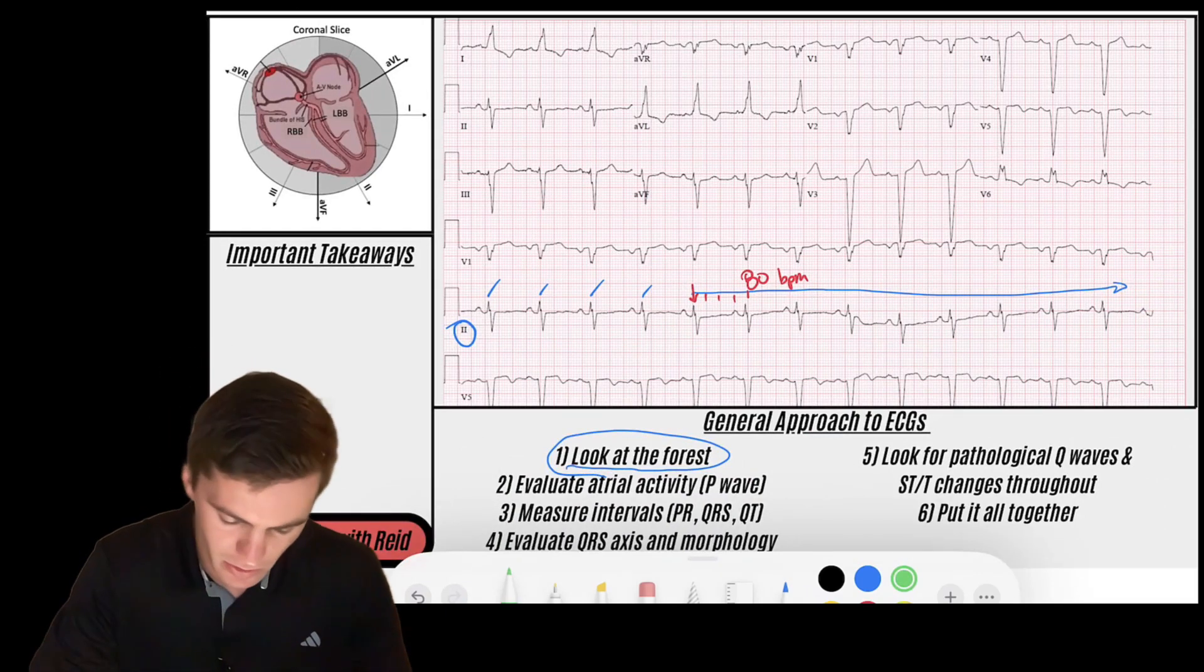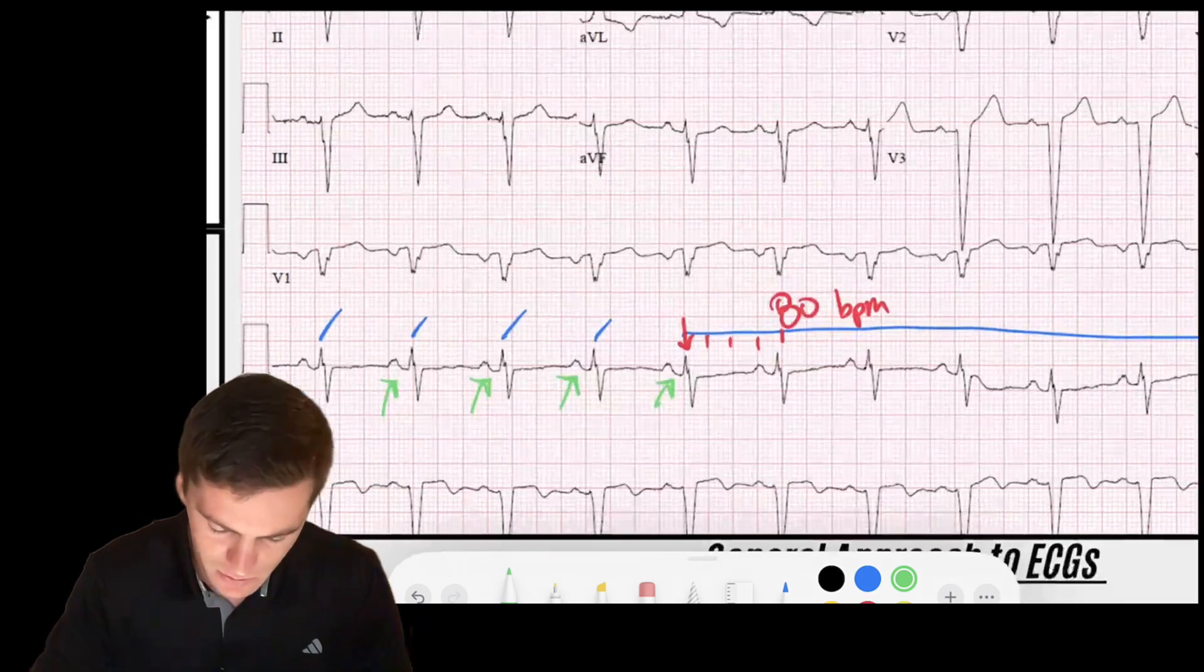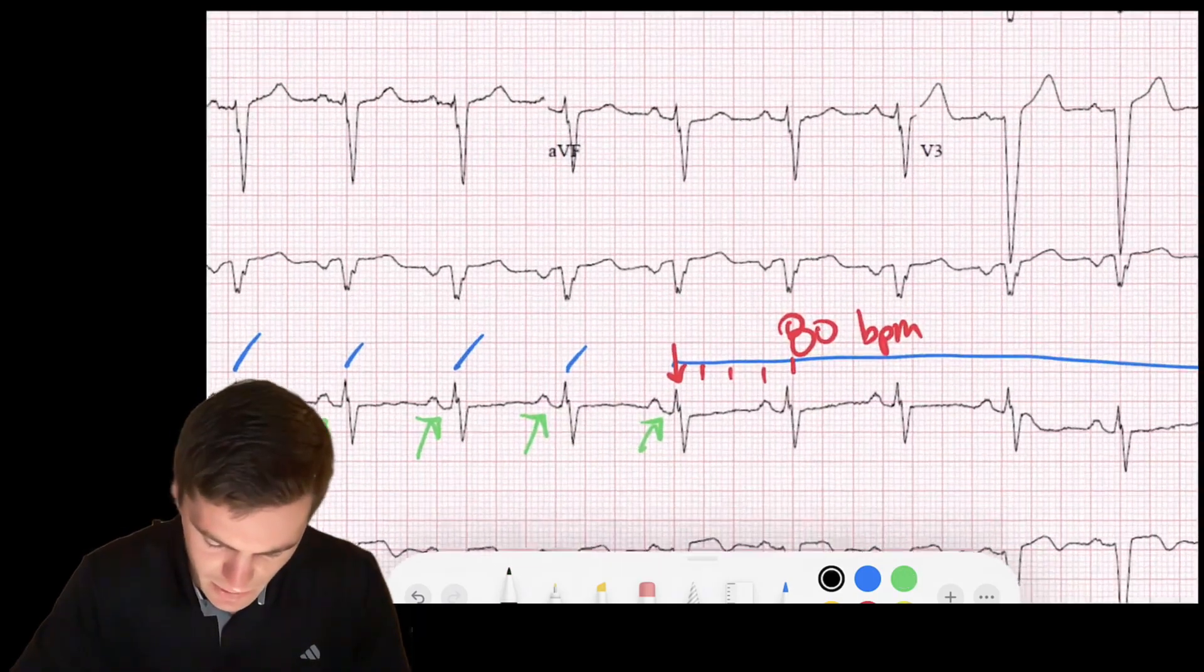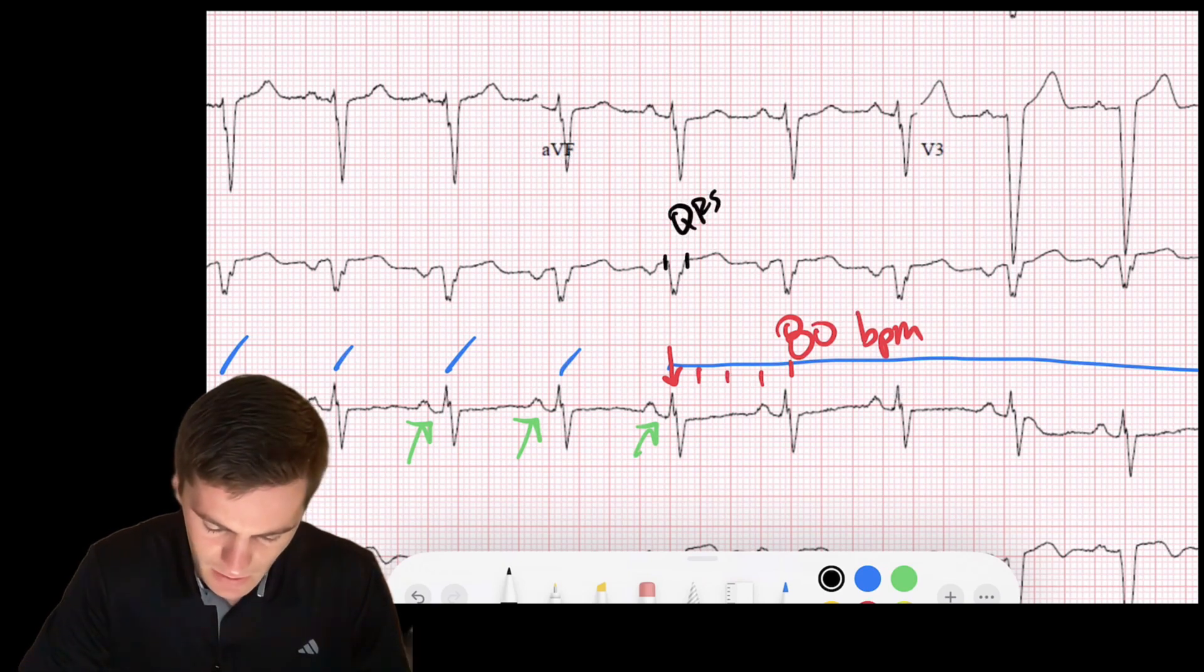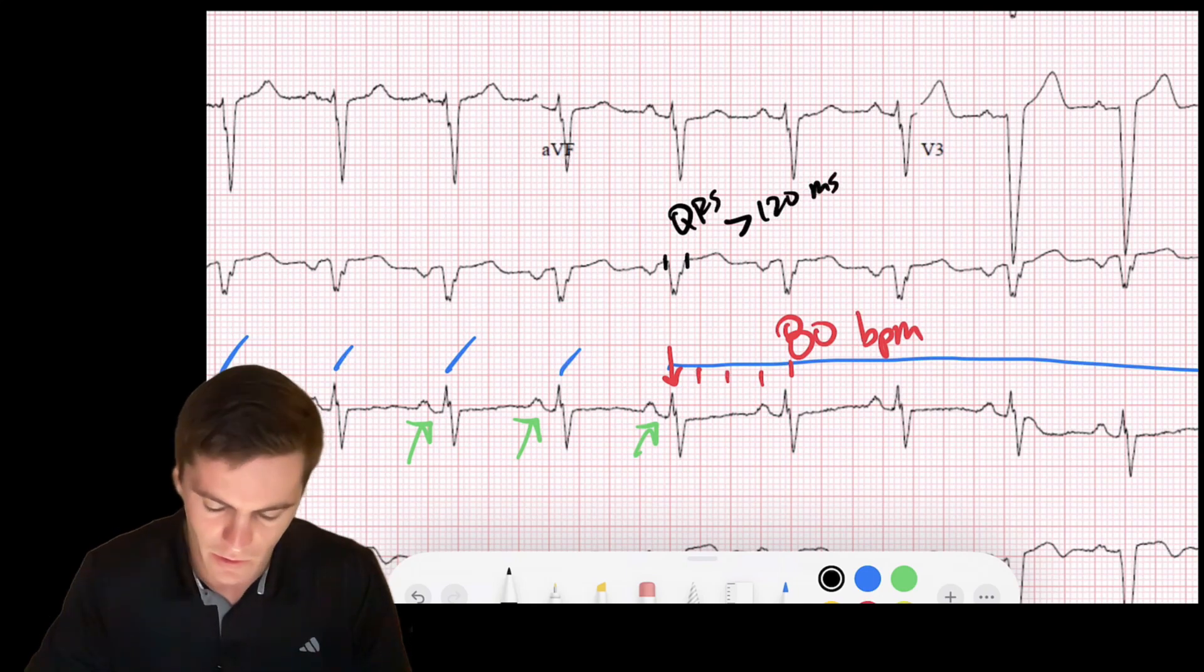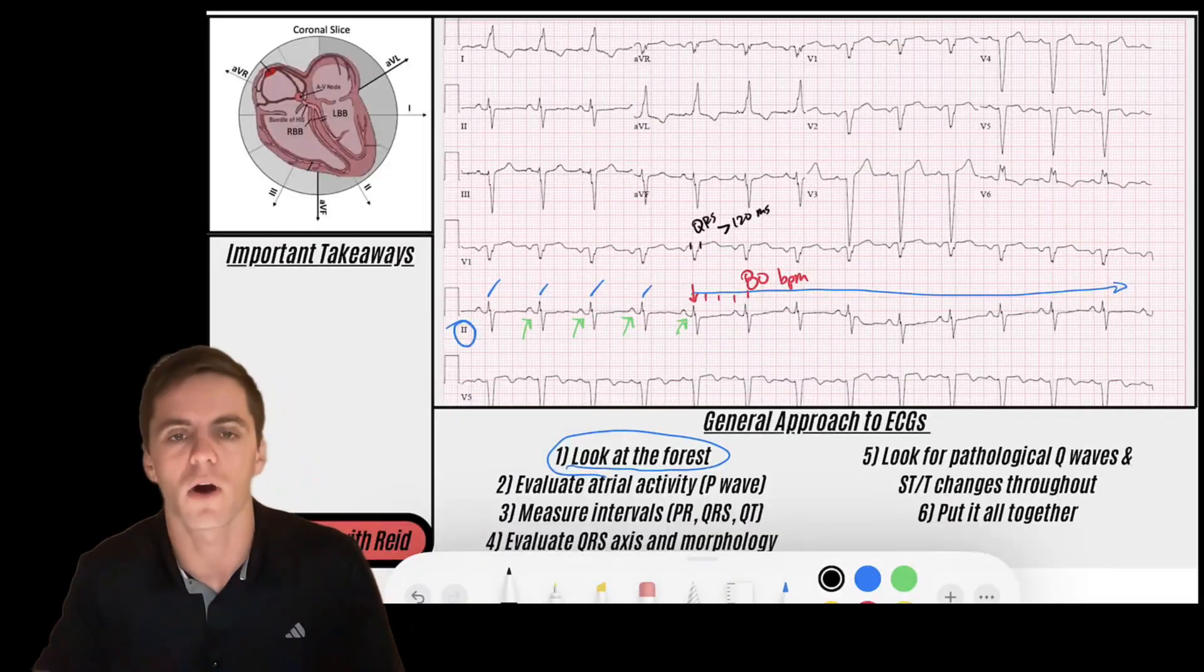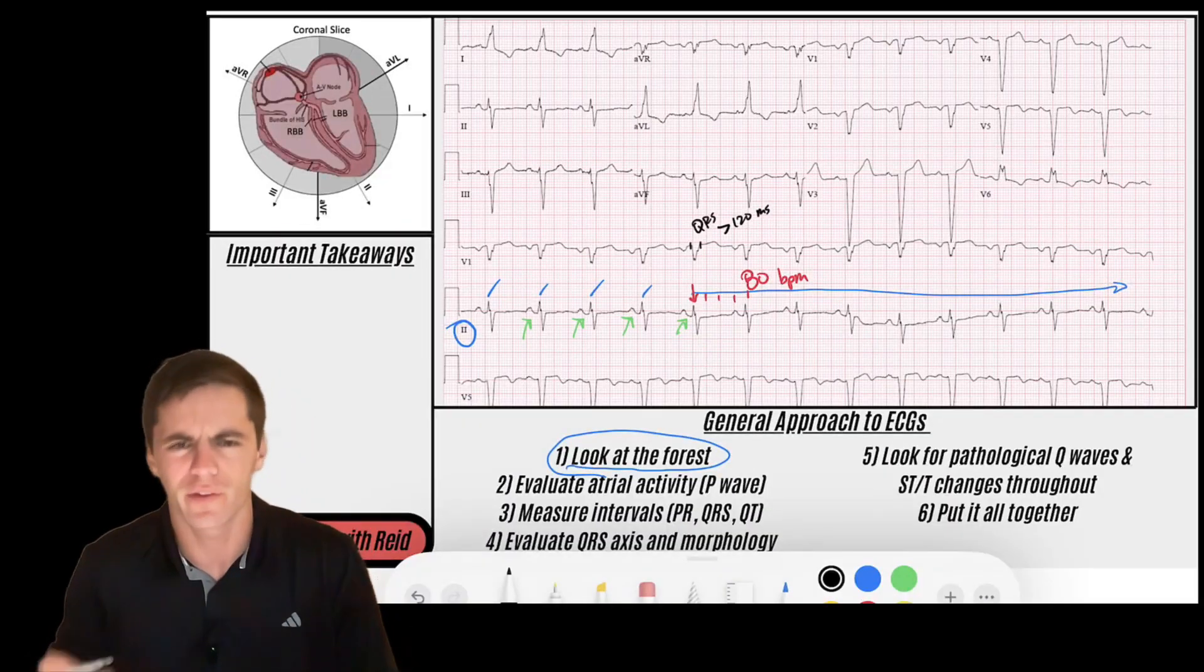The rhythm seems to be regular and it appears that there are some P waves in front of those QRS complexes. We'll need to verify that they're sinus P waves. When I look at the QRS, it looks like the QRS might be wide. If I look at the QRS duration, maybe a little bit greater than 120 milliseconds or greater than three small boxes. So we've got a regular wide complex rhythm at 80 beats per minute.